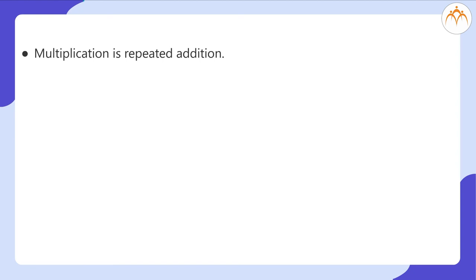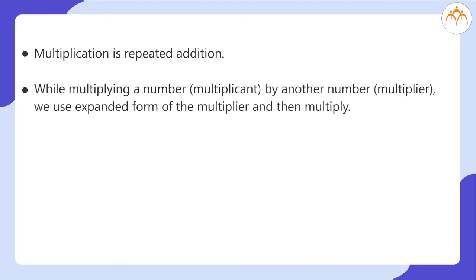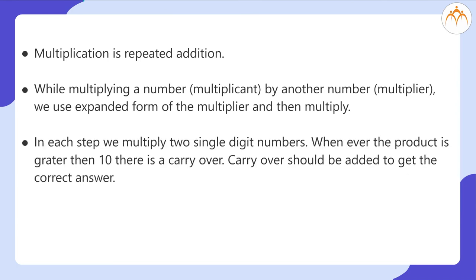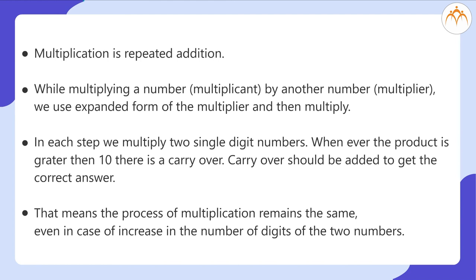What did we learn? Multiplication is repeated addition. While multiplying a number — the multiplicand — by another number — the multiplier — we use the expanded form of the multiplier and then multiply. In each step, we multiply two single-digit numbers. Whenever the product is greater than 10, there is a carryover. Carryover should be added to get the correct answer. That means the process of multiplication remains the same even in case of an increase in the number of digits of the two numbers.